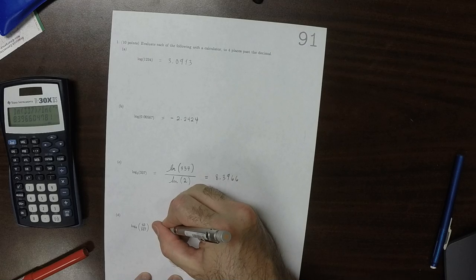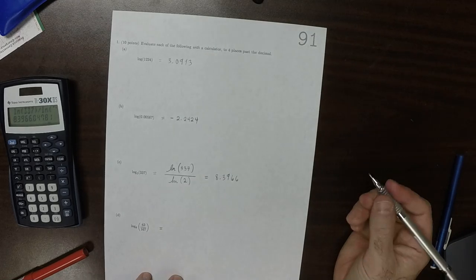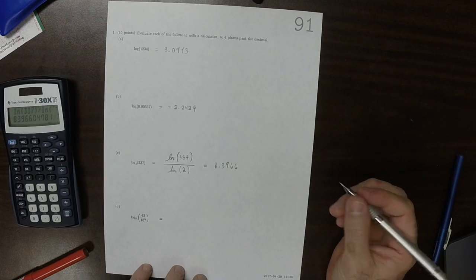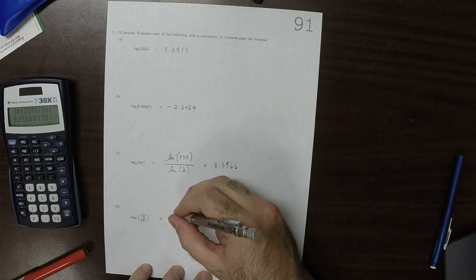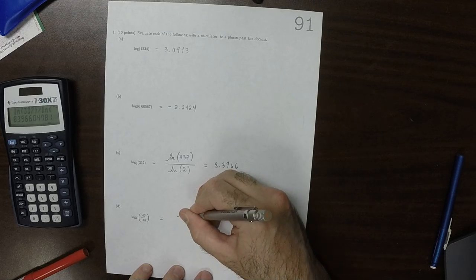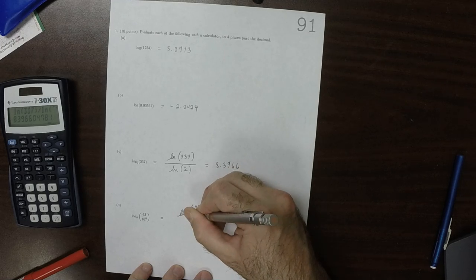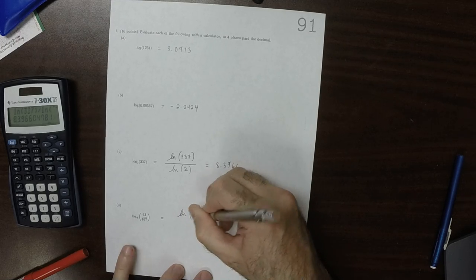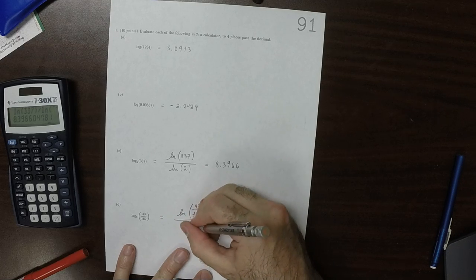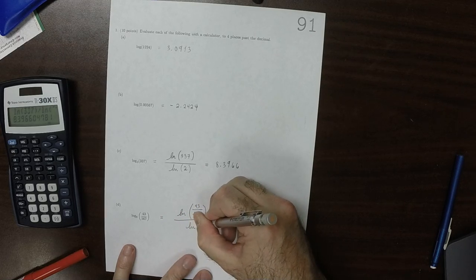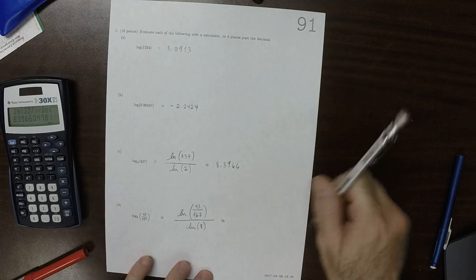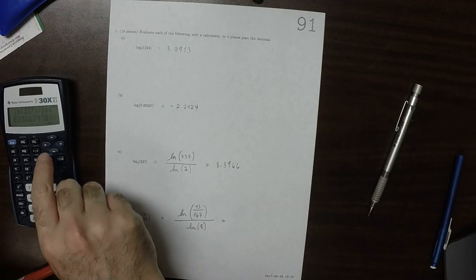And then for this one, again, I don't have a log base 8 button on my calculator, but the change of base formula tells me that this is natural log of 43 over 167 divided by natural log of 8. And I can type that into my calculator.